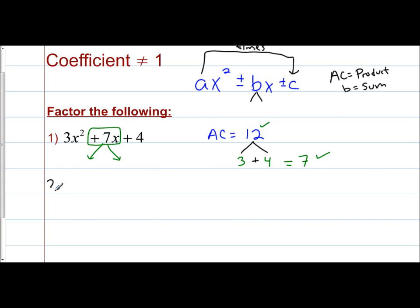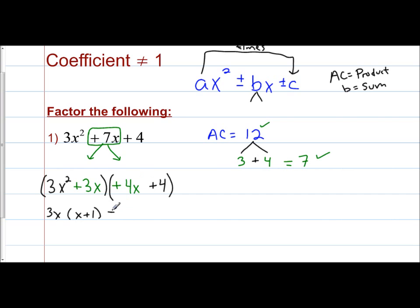So we split our b term into those factors. We keep our first term as 3x² and our last term as positive 4. What we're going to do is split 7x into 3x plus 4x. All we did was split 7 into the two terms, which allows us to do factoring by grouping. The GCF in the first grouping is 3x, leaving x plus 1. The GCF in the next grouping is a positive 4, leaving x plus 1. Both groups have x plus 1, so we factor that out and are left with 3x plus 4.